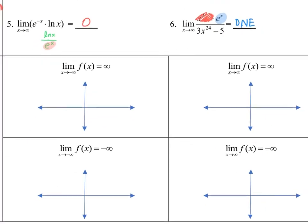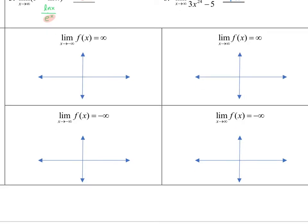In this next part, let's look at what infinite limits look like graphically. As x approaches negative infinity, y is going to be approaching infinity — as I move to the left, my graph is moving up, the y's are increasing. So as I go to the left, we take an upward turn. On the next one, as x approaches infinity, y is approaching infinity — as I move to the right, the y's are increasing, and this graph would be pointing up at the right end.